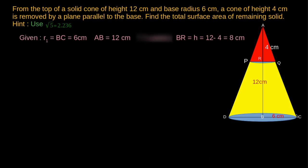In this problem, R1 is given and height h of the frustum of the cone is h equals 12 minus 4, that is, 8 cm. To find R2, that is, RQ,